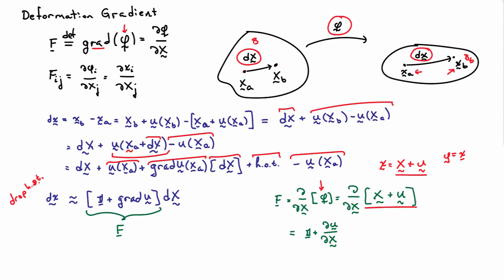What I find as a final result is that d little x is equal to F d big X in the limit as the norm of d big X goes to zero. If I'm looking at finite lengths of material, then this will be an approximation, which gets better as the size of the vector gets smaller. But in the limit, it's actually an exact expression here.